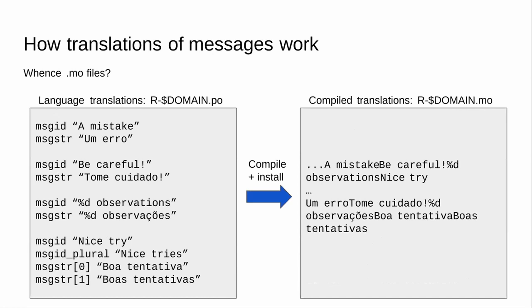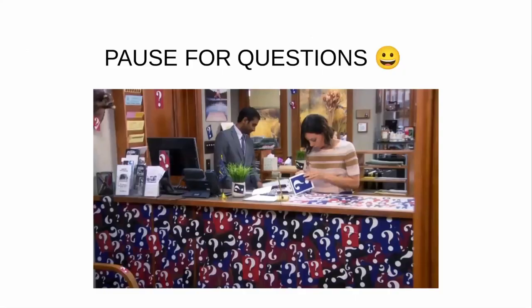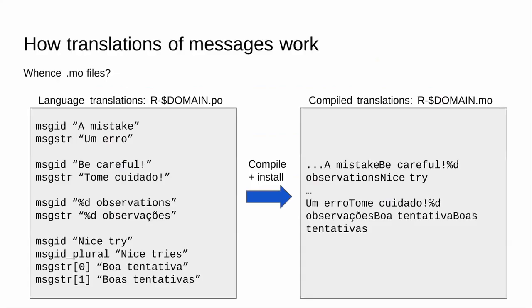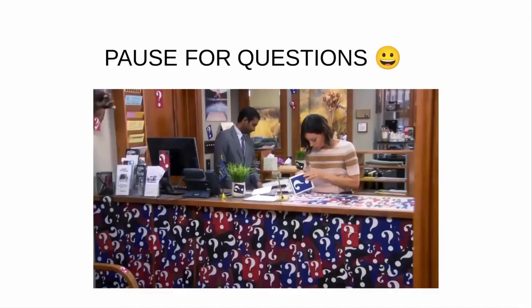The last step is using the gettext tool to compile the .po file into that .mo file, and there's a tool to put it in the right place so that R can find it at runtime. The .po file is a text file you can open in any text editor — R Studio, Atom, Sublime, Emacs, anything. The .mo file is a compiled binary, so if you open it, it's mostly gibberish. That is the basic essential mechanics of how translations work.